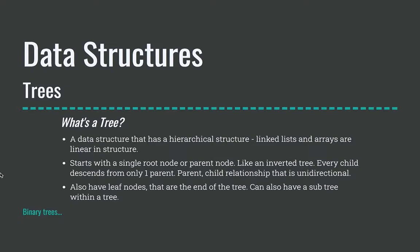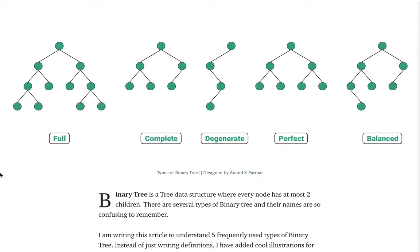So it starts with a single root node or a parent node. It's like an inverted tree and every child descends from only one parent, parent child relationship. This is unidirectional. Also, it has leaf nodes that are at the end of the tree and can have sub trees within a tree. So let's take a look at a diagram here.